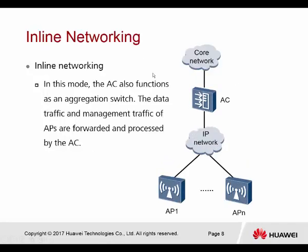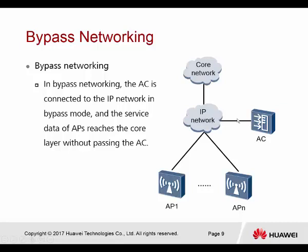In inline networking, traffic must pass through the controller before accessing the network. The uplink is on the AC controller. In bypass mode, the AC controller is attached beside the core switch — it's just attached beside. They only use the CAPWAP tunnel to manage all the APs. The user data path depends on the forwarding mode selected. If we select direct forwarding, all user data sent to the AP goes directly to the network without returning to the controller.